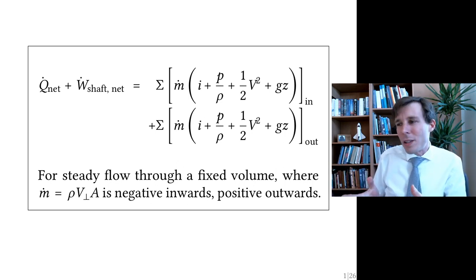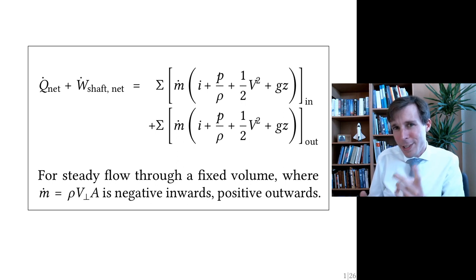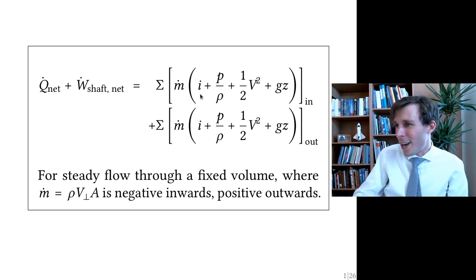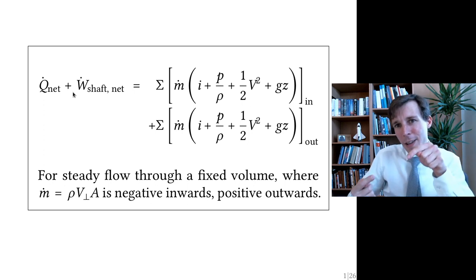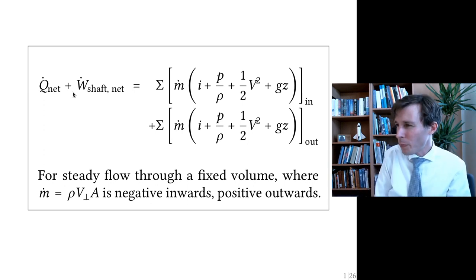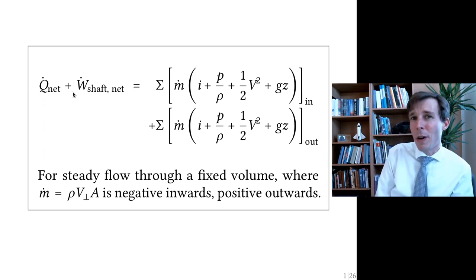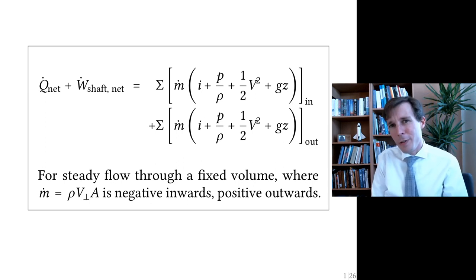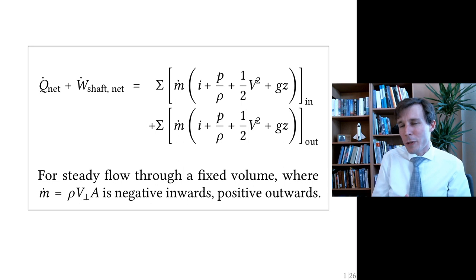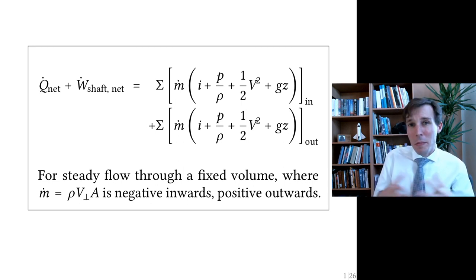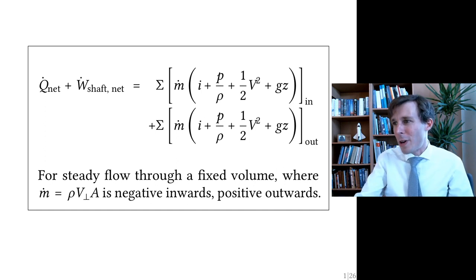The problem with this equation is that it has a lot of terms. At the inlet you have five terms, five more at the outlet, and two net transfer terms from outside — that's 12 terms total. If you are looking for one value, you need to put in 11 other values. So this is quite a lot of frustration for fluid analysis, and it's tempting to take this equation and remove everything you don't like about it.